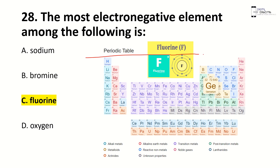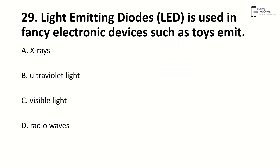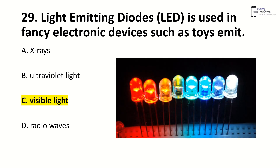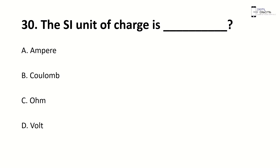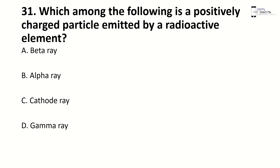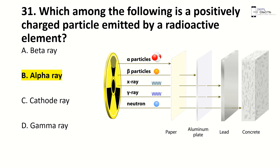In the periodic table, electronegativity increases left to right and decreases top to bottom, so fluorine is the most electronegative element. Light emitting diodes or LEDs are used in fancy displays — right answer is C, visible light. The unit of charge is — right answer is B, coulomb. Ampere is current, ohm is resistance, and volt is voltage. Which of the following is a positively charged particle emitted by a radioactive element? Right answer is C, alpha rays.